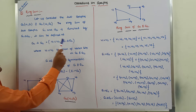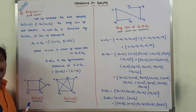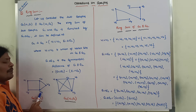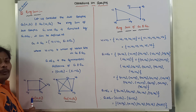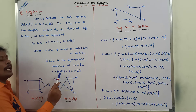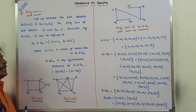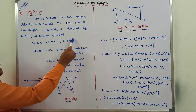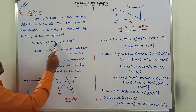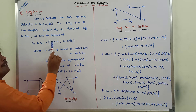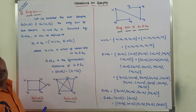E1 delta E2 is nothing but the symmetric difference between the edge sets in graph G1 and graph G2. Where E1 delta E2 is equal to E1 union E2 minus E1 intersection E2. So E1 delta E2 can be replaced by this expression, and we need to find V1 union V2 and E1 delta E2.